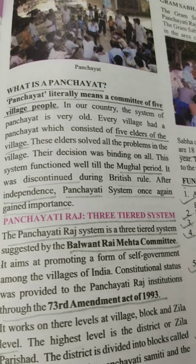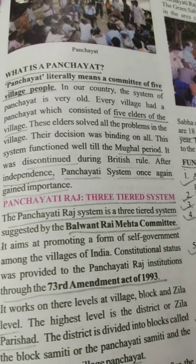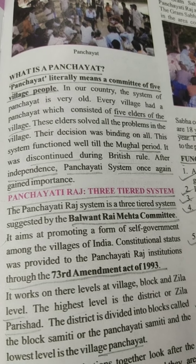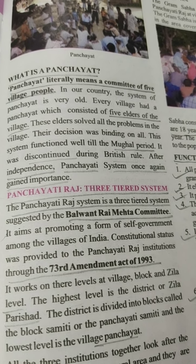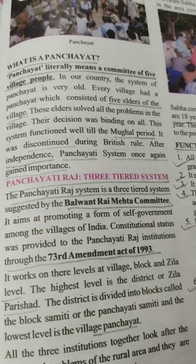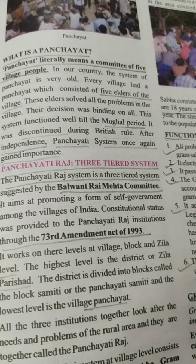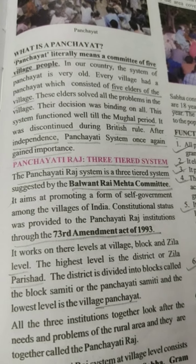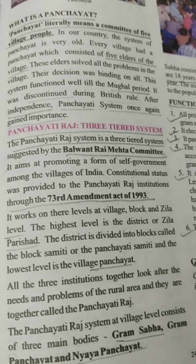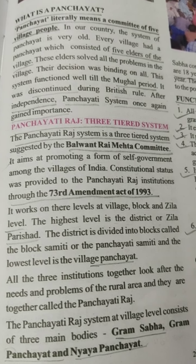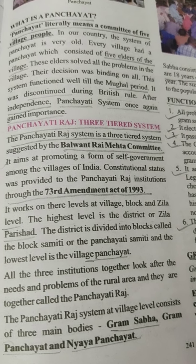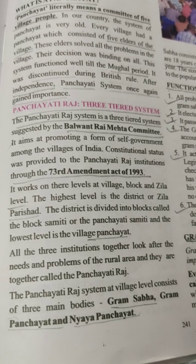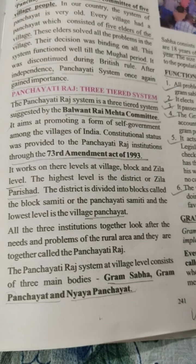The Panchayati Raj system is a three-tier system suggested by the Balwant Rai Mehta Committee. It aims at promoting a form of self-government among the villages of India. The constitutional status was provided to the Panchayati Raj institutions through the 73rd Amendment Act of 1993. It works on three levels: village, block, and Zilla level. The highest level is the district or Zilla Parishad. The district is divided into blocks called the Block Samiti or Panchayat Samiti, and the lowest level is the village Panchayat. All three institutions together look after the needs and problems of the rural area and are together called the Panchayati Raj.